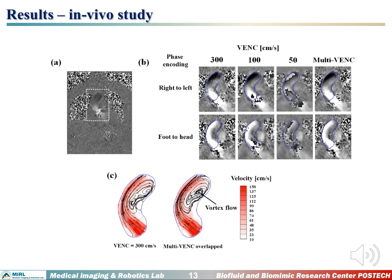To demonstrate the present technique for an in vivo study, we measured blood flow at the ascending aorta, overlapping velocity fields with three different VENC parameters. As seen from the phase images and streamline visualization, velocity noise in the phase image was reduced, and we could identify the recirculation vortex flow at the ascending aorta more clearly.